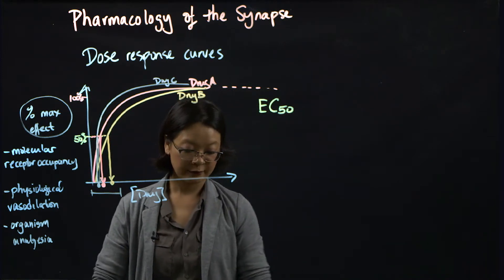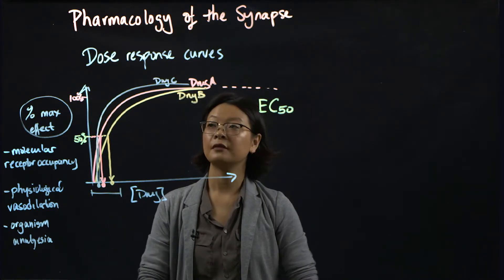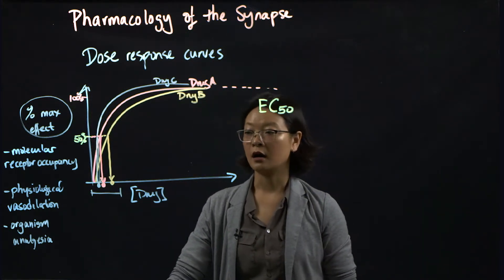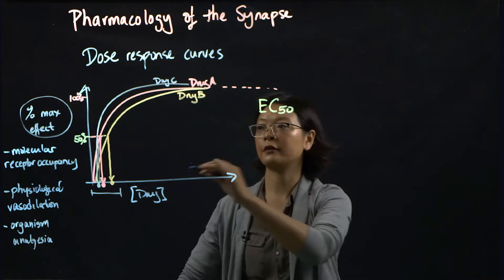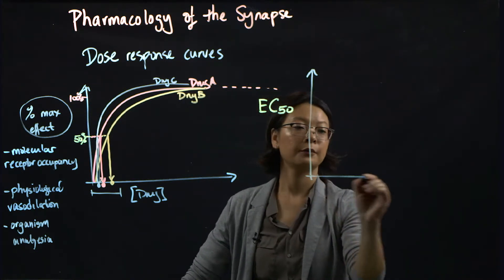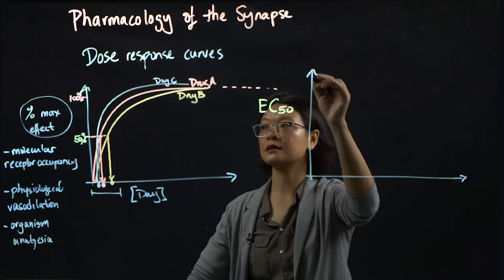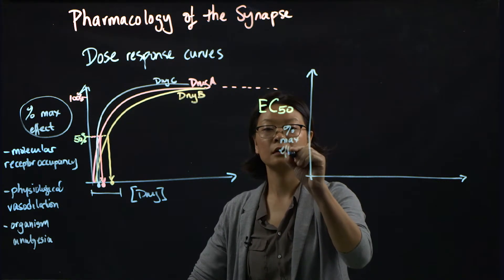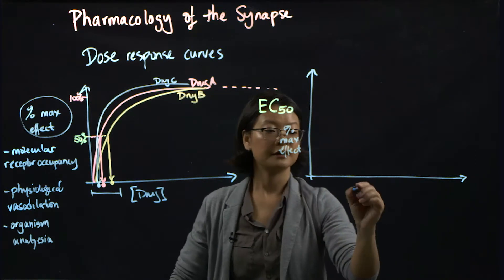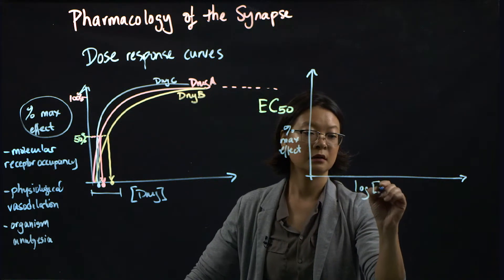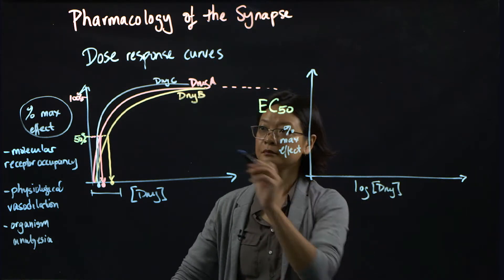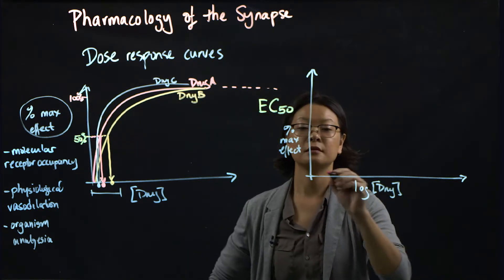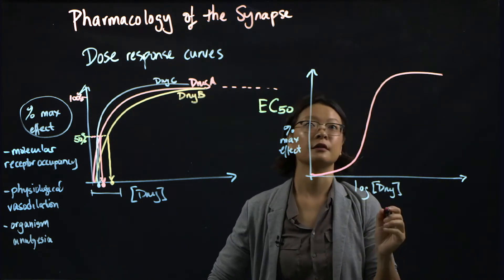So in pharmacology, more often than not, you will see the dose response curve turned into a semi-log curve. So if I redraw this over here, where this is still the same percent max effect, but now this becomes log of your drug concentration.